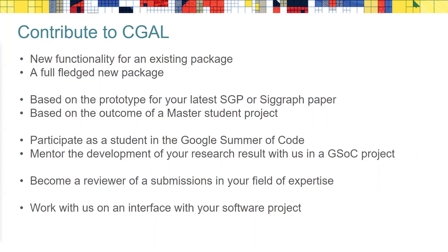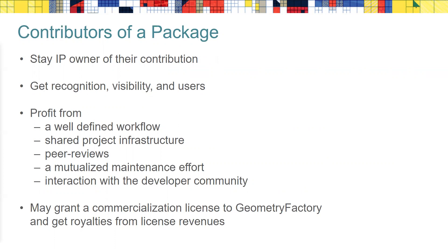Yet another way to contribute is working with us to make software you prefer distributing independently interoperable with CGAL. For example, we worked with Nicolas Mellado, a researcher at IRIT in Toulouse, to enable smooth interaction with the OpenGR point cloud registration library. When you decide to contribute software to CGAL, you stay the owner of your code — the CGAL triangulations are owned by INRIA, the 2D Boolean operations are owned by Tel Aviv University, and so on. You do not give anything away, but you get recognition as package author with a BibTeX entry, higher discoverability through a well-established project, a well-defined workflow, shared infrastructure, peer reviews, mutualized maintenance, and interaction with the developer community.